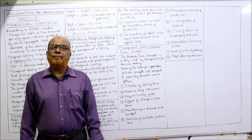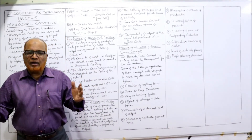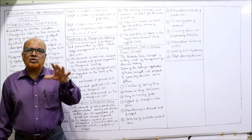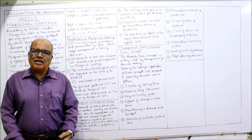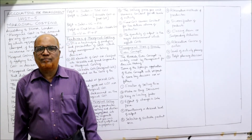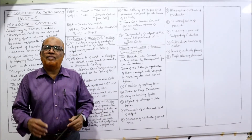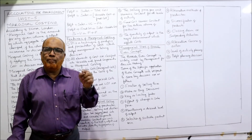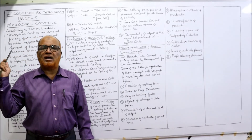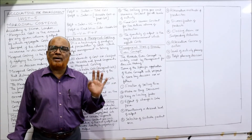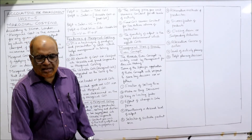The second application is make or buy decisions. There are situations where management must decide whether to make a component or buy it from outside. For example, a washing machine company does not produce every part itself — many parts are bought from other companies and assembled. Sometimes management must decide whether to buy a component from outside or make it within the business. Marginal costing technique is very useful in taking the make-or-buy decision.